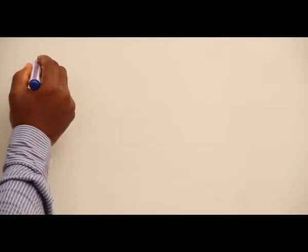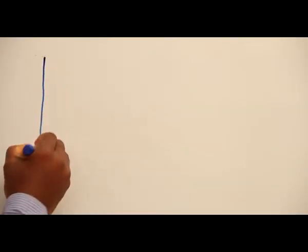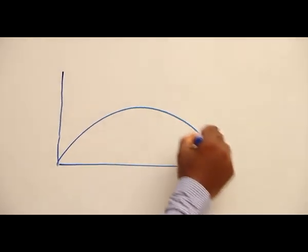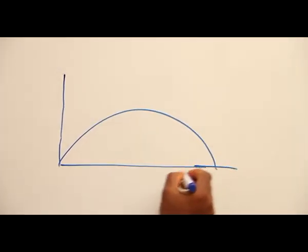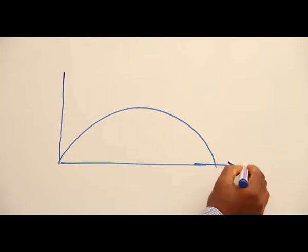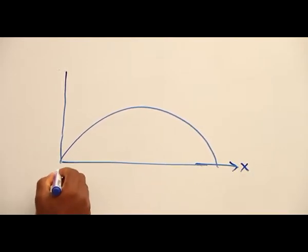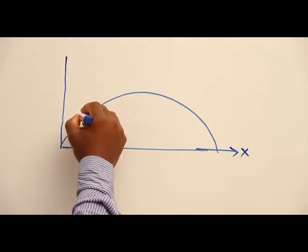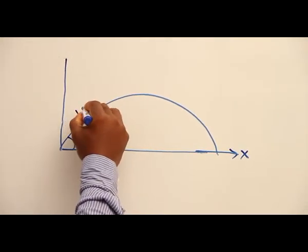The motion of the projectile is represented as shown in this diagram. This is horizontal distance x. The angle made with the horizontal is theta. The initial velocity is u.